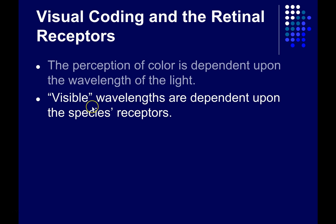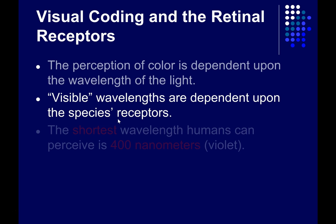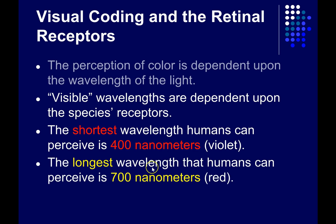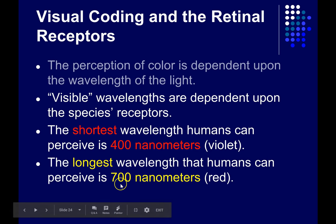The wavelengths of light that are visible vary from species to species, depending on the properties of that species' receptors. For us, the shortest wavelengths we can perceive are about 400 nanometers, which corresponds roughly to our subjective perception of the color violet. And the longest wavelengths we can perceive are about 700 nanometers, which would correspond roughly to our perception of the color red.